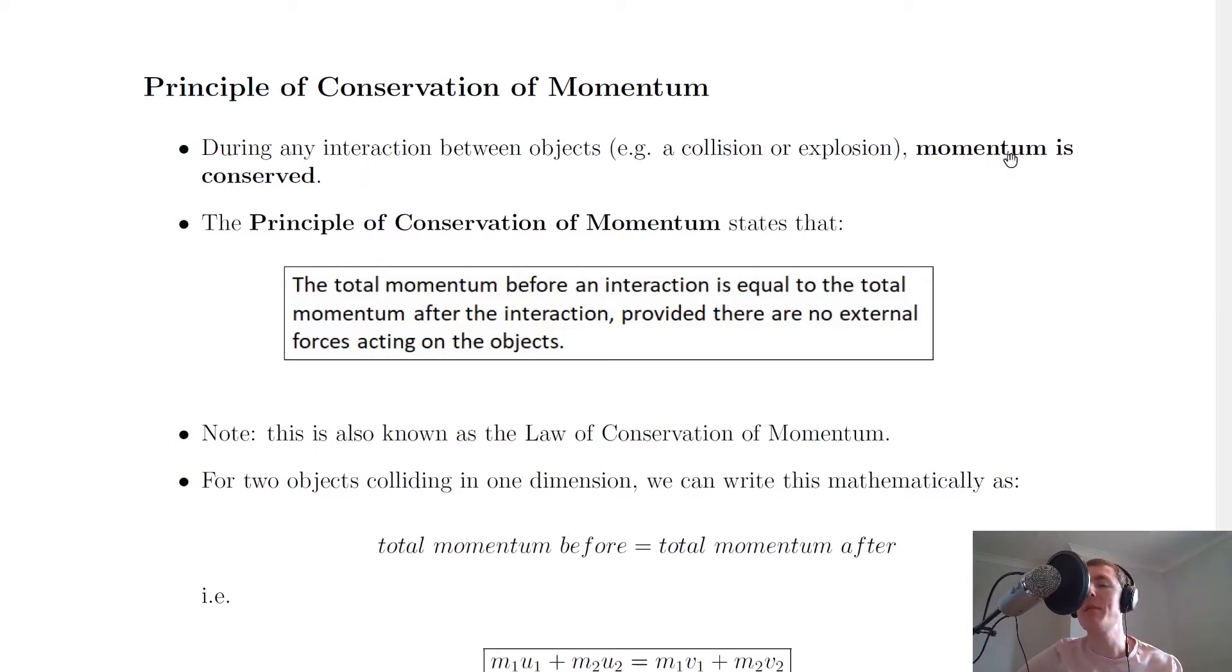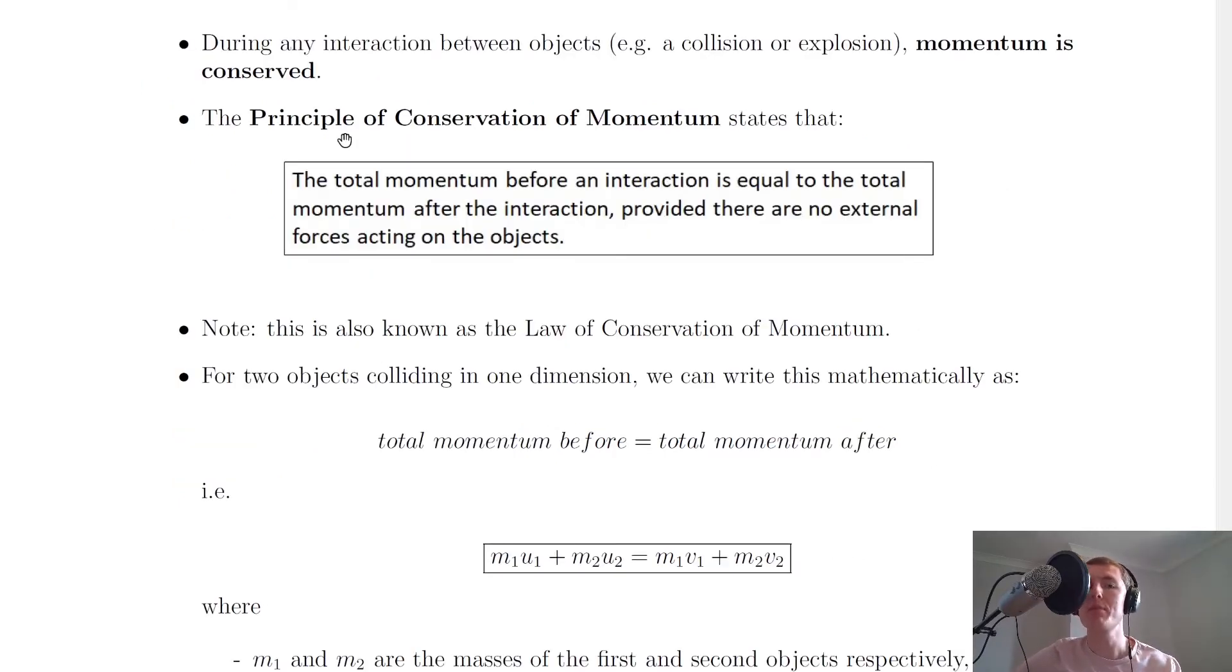This means the momentum before an interaction must equal the momentum after an interaction. We can define this more formally via the principle of conservation of momentum, which states that the total momentum before an interaction is equal to the total momentum after the interaction, provided there are no external forces acting on the objects. If there were external forces acting on the objects, they would be accelerating due to Newton's second law, and these unbalanced forces would cause momentum to not be conserved.